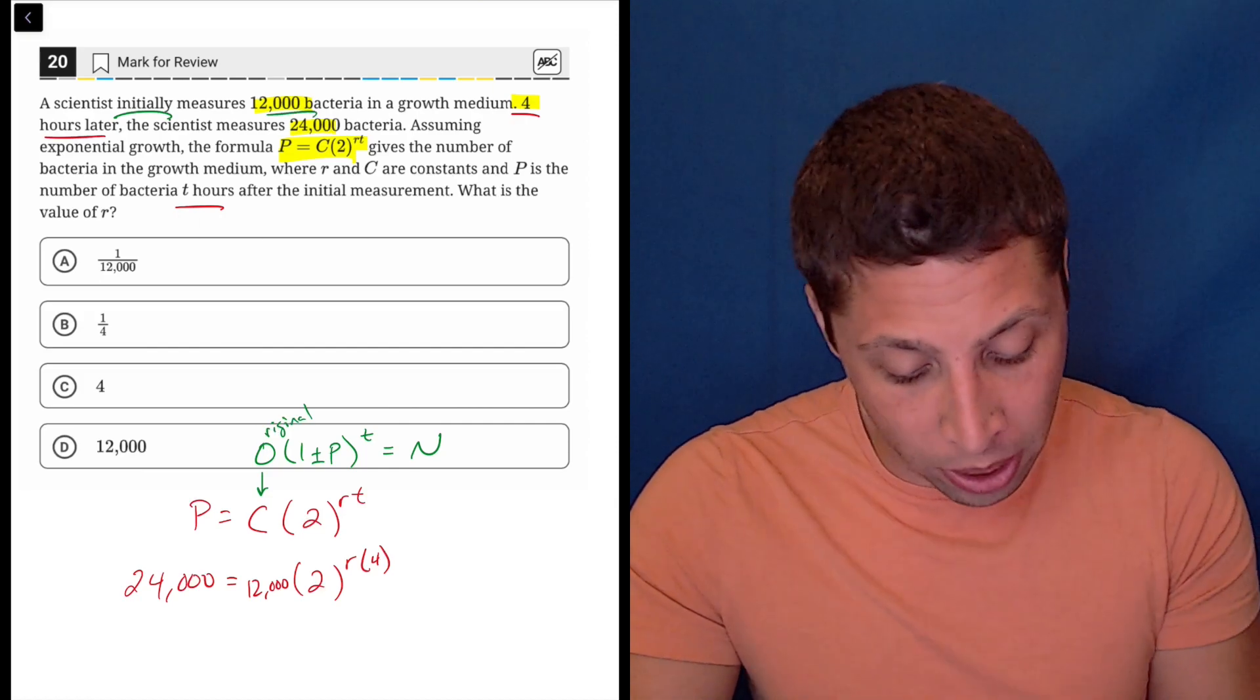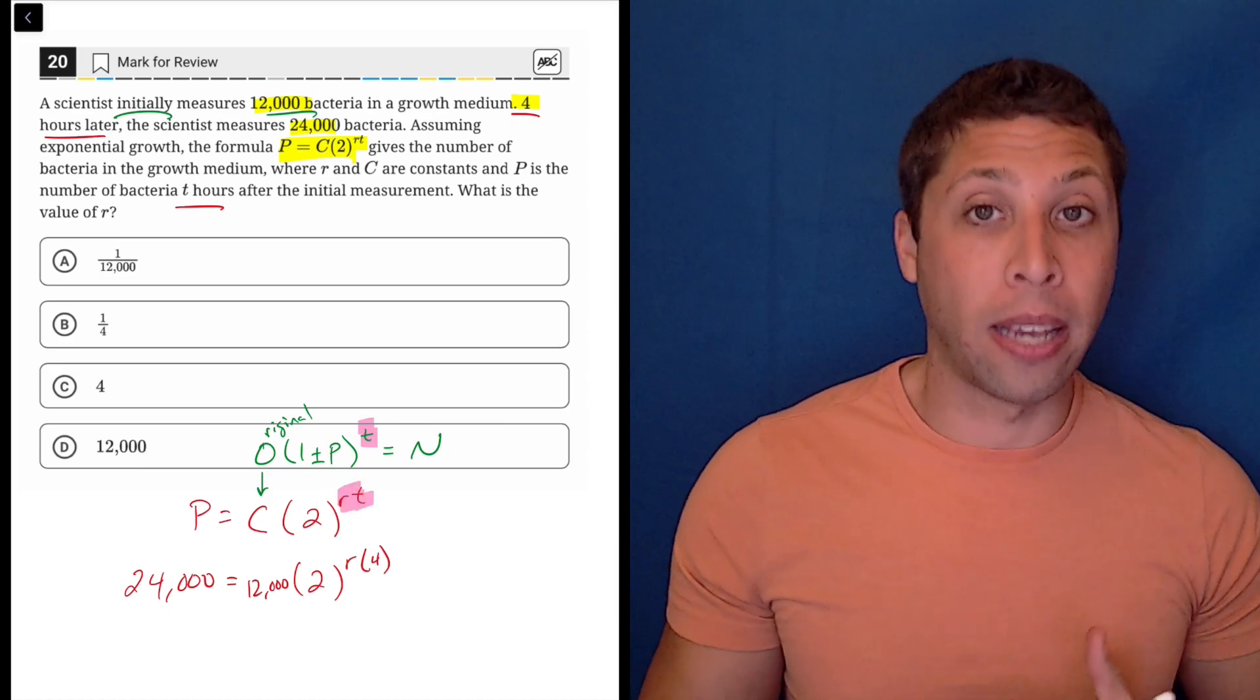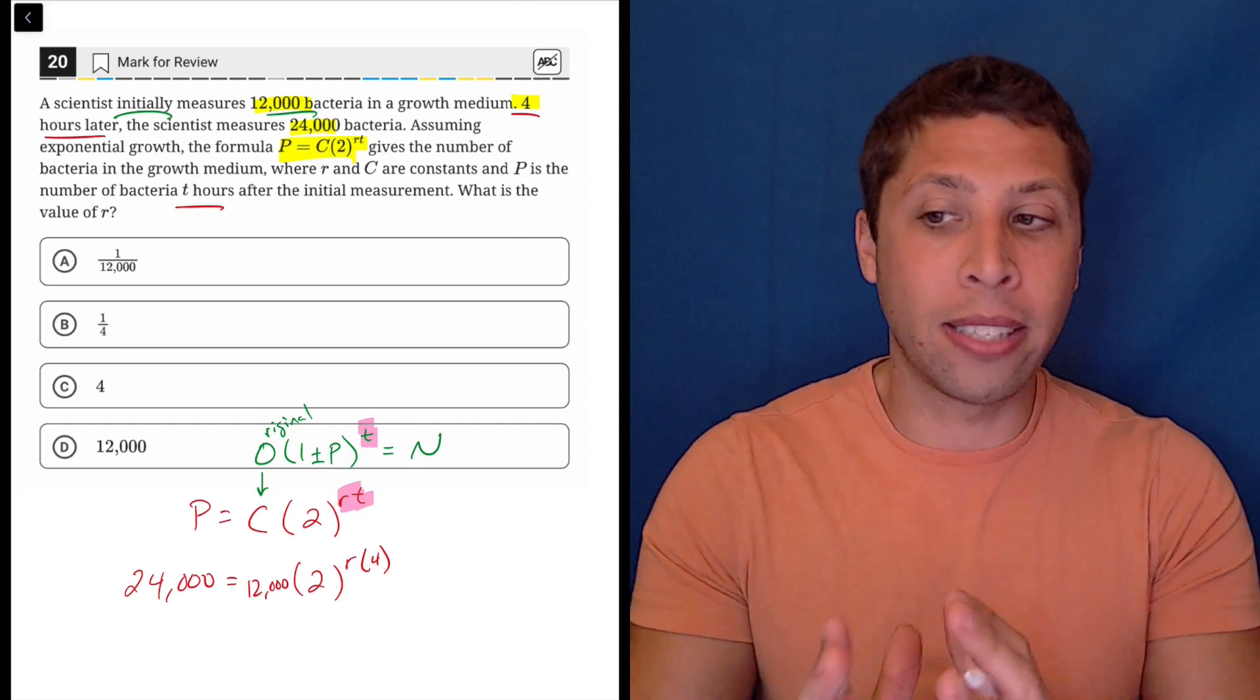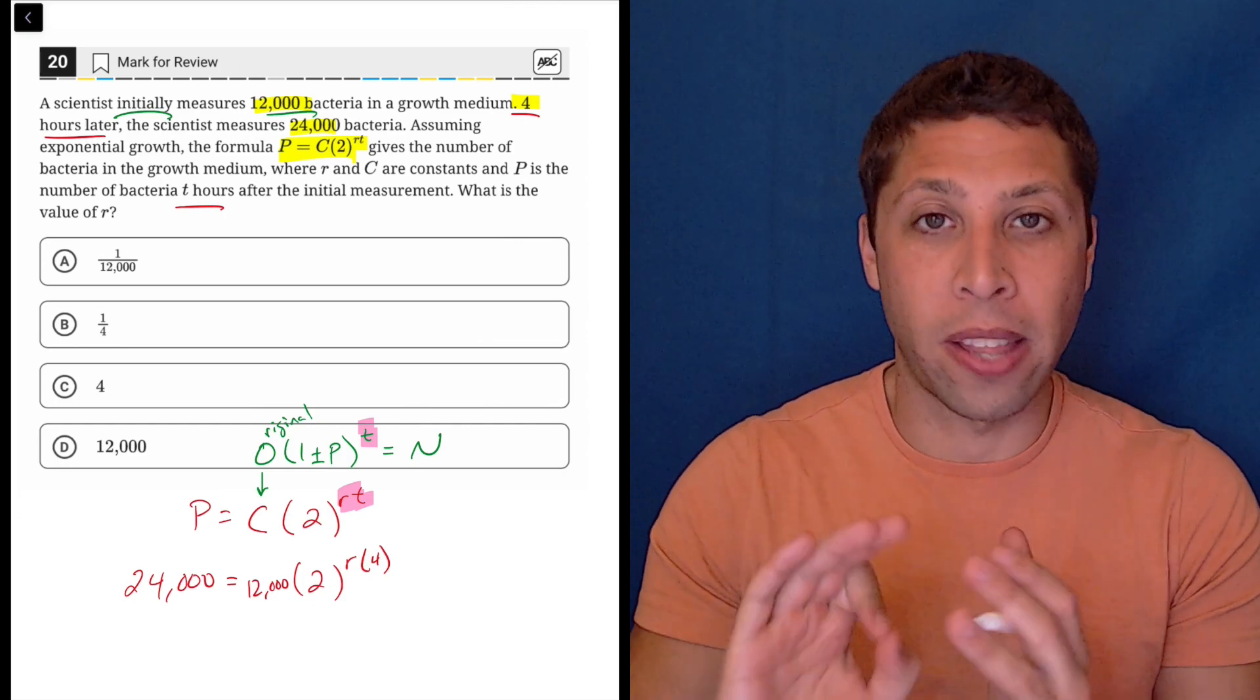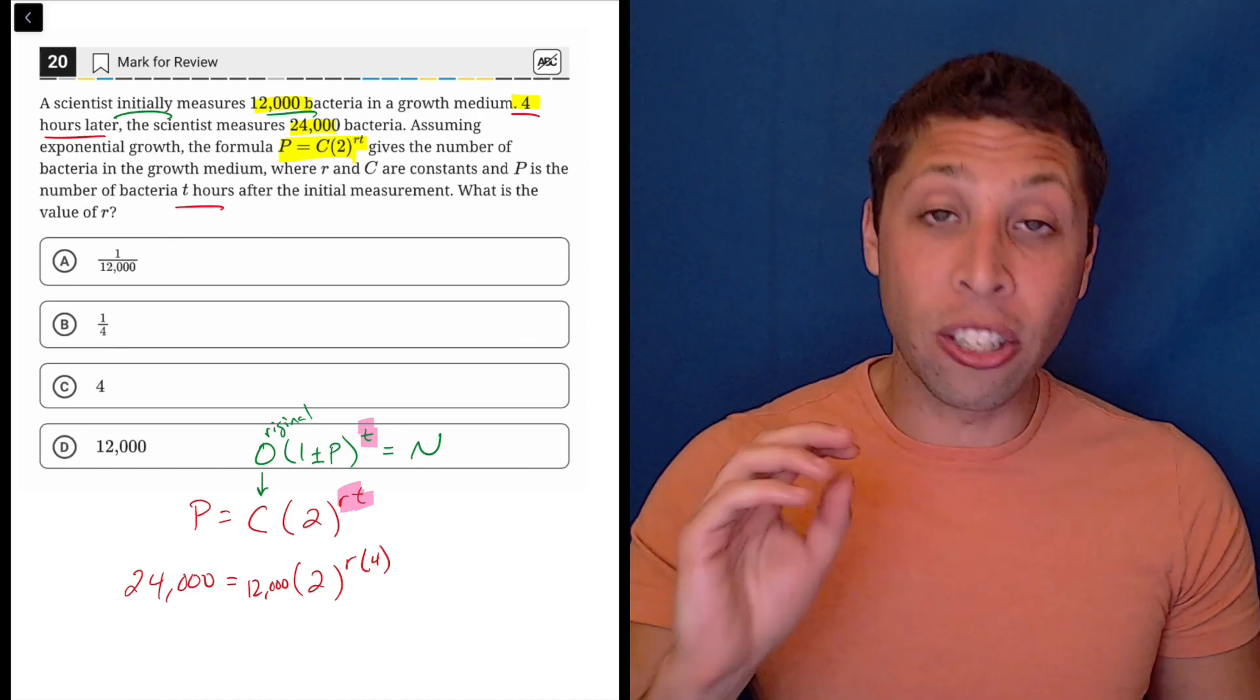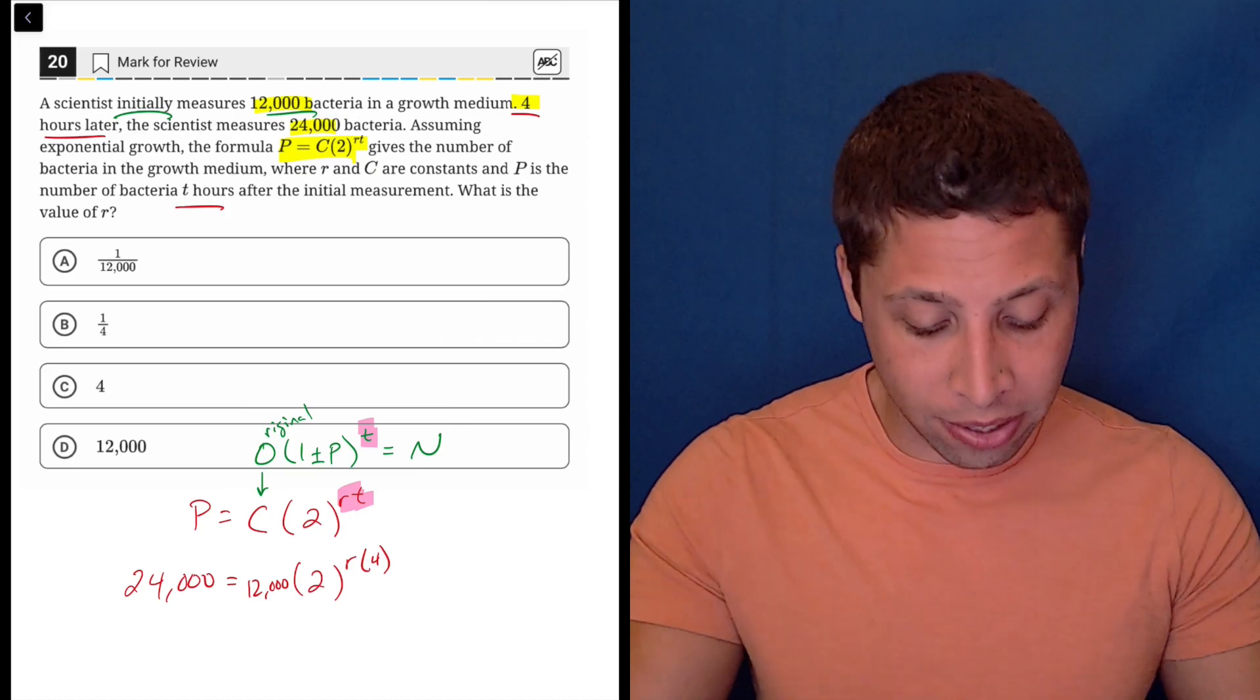The biggest difference between my version and this version is the exponent is way more complicated here, and that's okay. My version doesn't account for that, but I can deal with it because it's a slight change to something I'm familiar with. When the SAT makes those slight changes, we just deal with them. Here, all I need to do is plug in everything else I know, and the rest will work itself out.